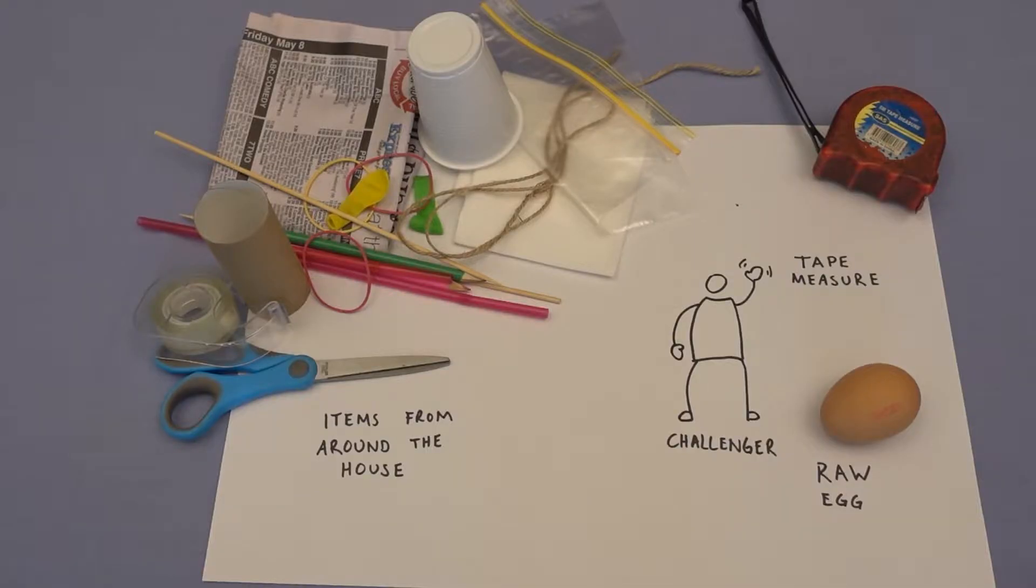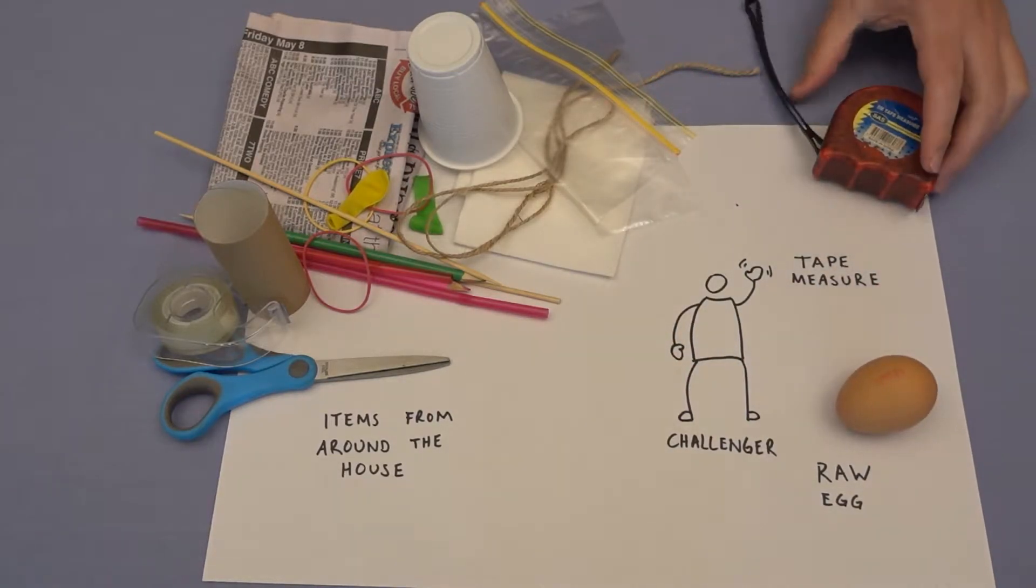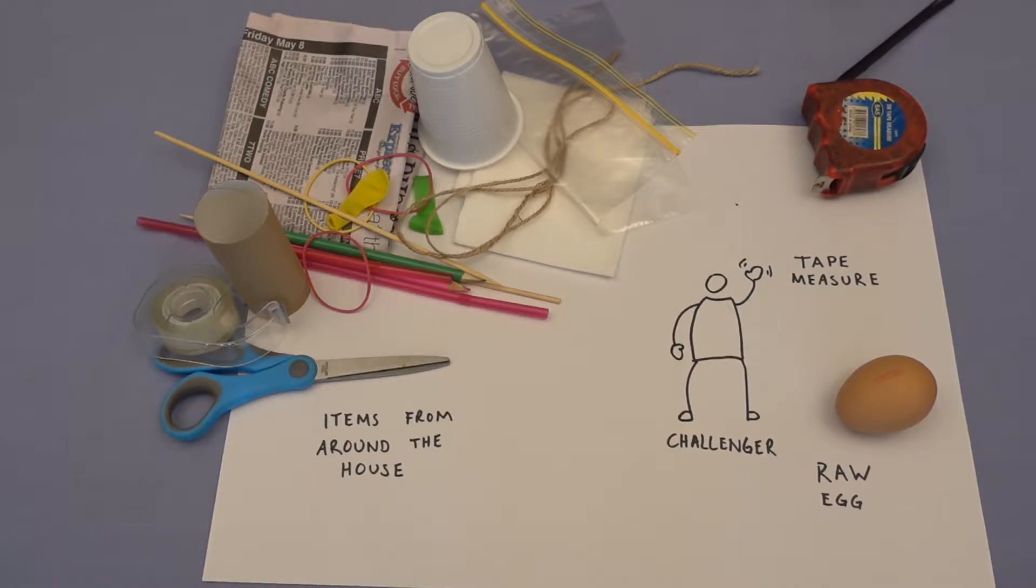We're going to do that with the egg drop challenge. There's only a couple of set things that you need for this challenge. The first one is a raw egg. The second one is a tape measure so you know how high you're dropping from. The third thing that it's good to have is a challenger. This could be someone in your household or it could be a friend, but if you don't have someone that you can challenge, just try it out and see if you can do it for yourself.